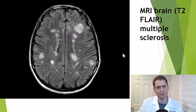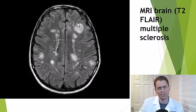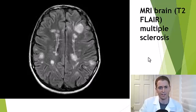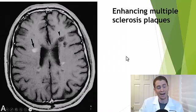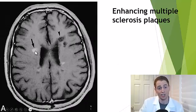This FLAIR image shows multiple sclerosis, an inflammatory disease of the central nervous system with well-demarcated lesions in the subcortical white matter, the periventricular white matter, and juxtacortical areas. In this next image, gadolinium-based contrast dye is given, which can cross the injured blood-brain barrier and get into the active plaques, showing active inflammation.